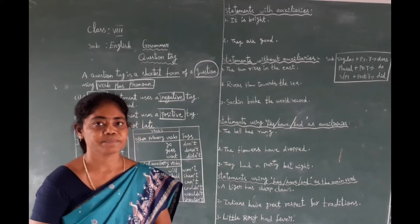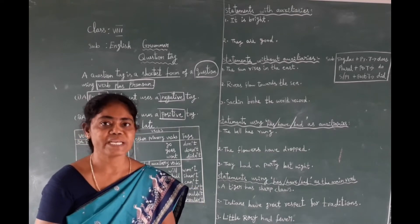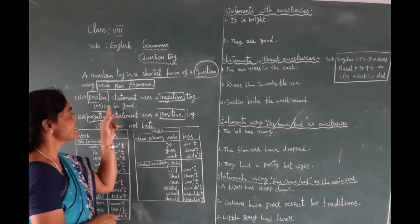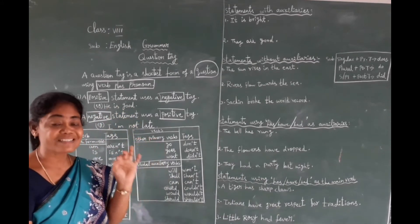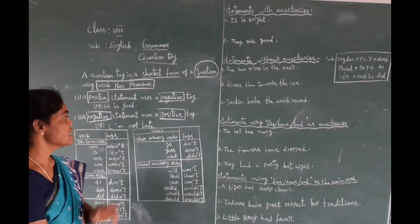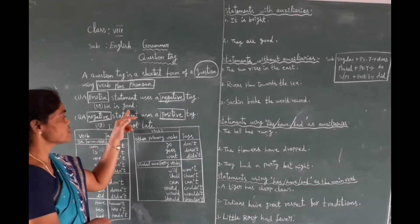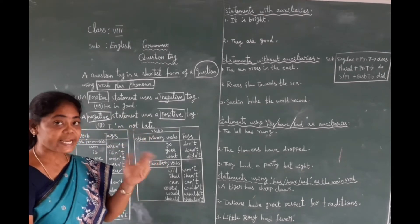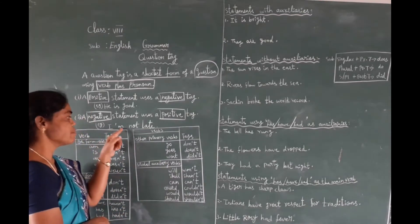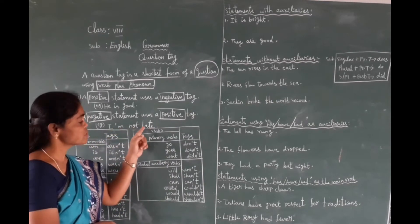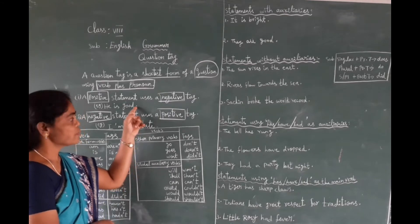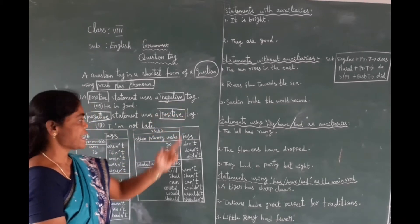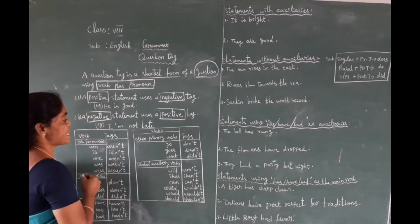Now, what is a statement? A statement is nothing but a simple sentence which gives a complete sense or meaning. For example: 'He is good.' This is a positive statement. Negative means 'not' — for example, 'I am not late' is a negative statement. So we know that a positive statement takes a negative tag.